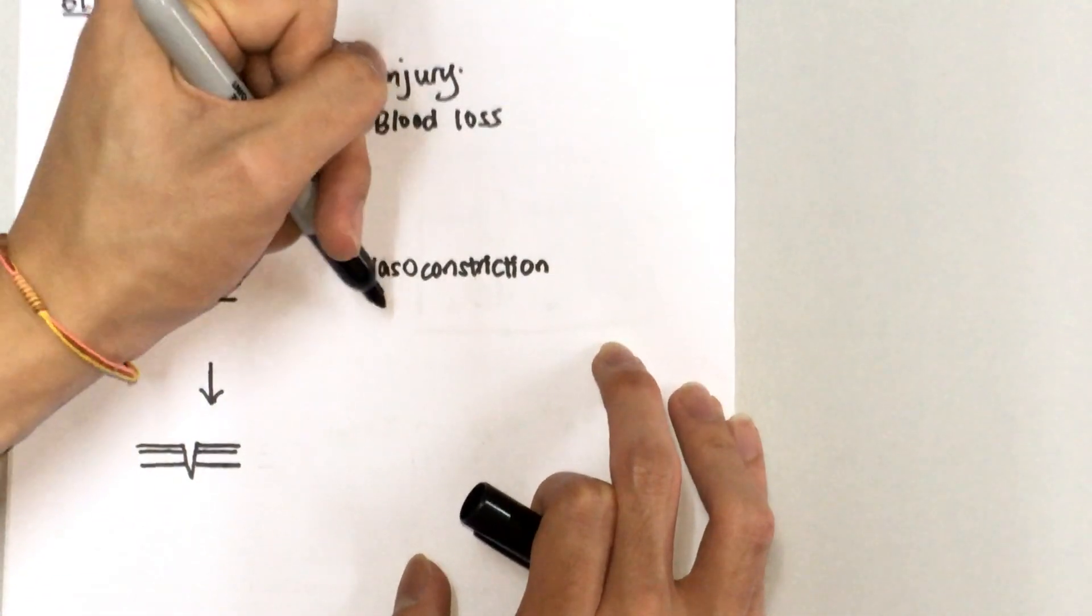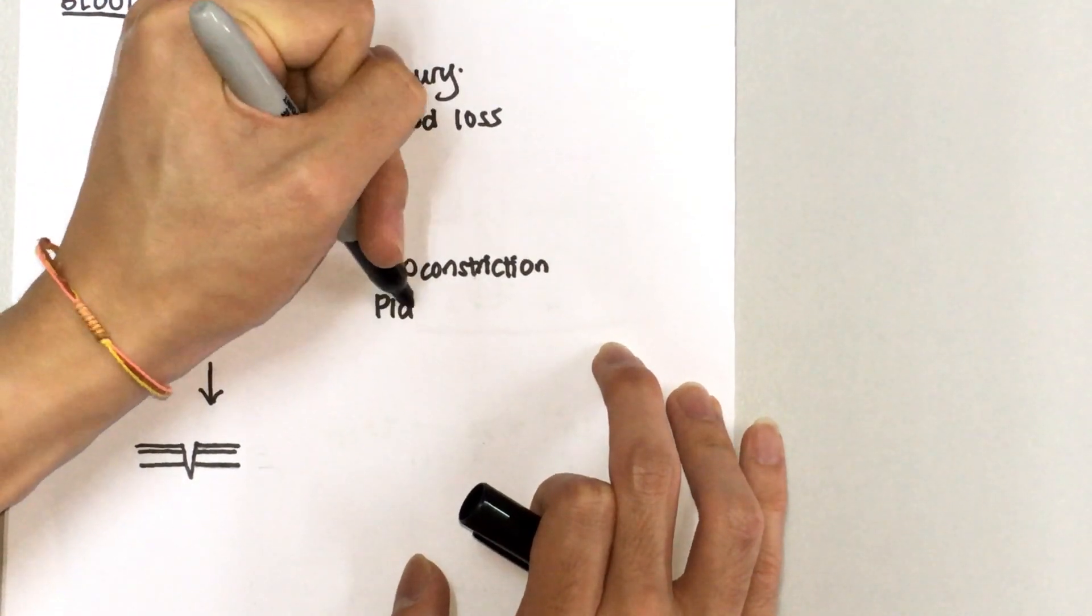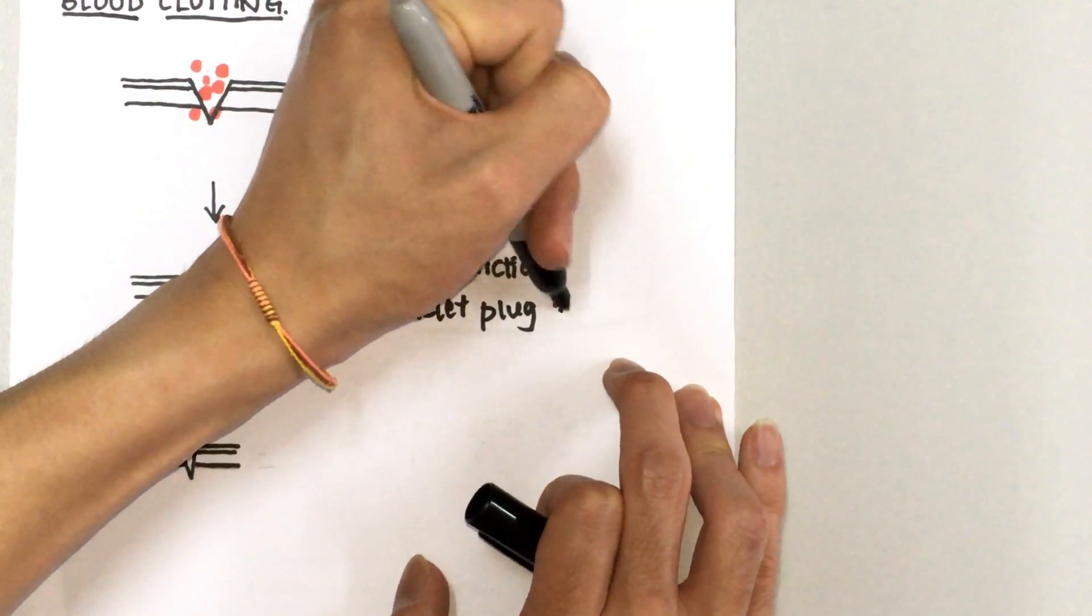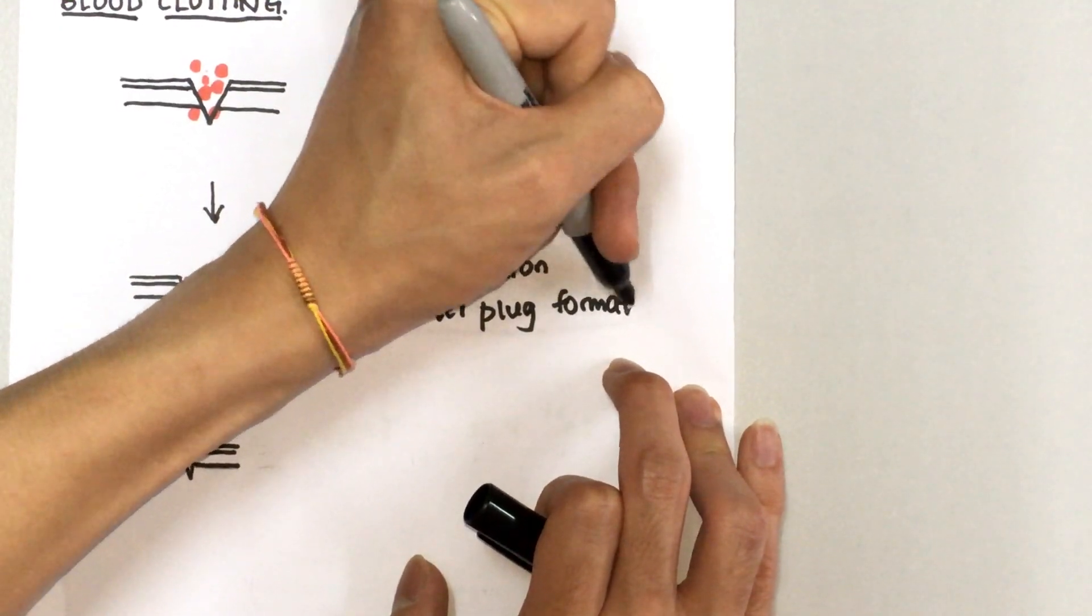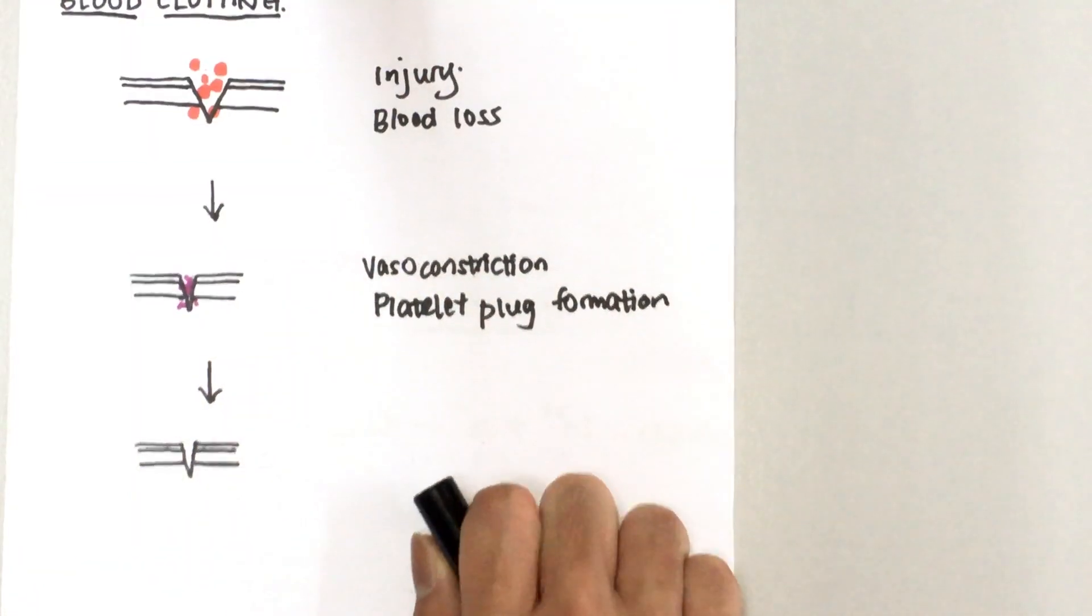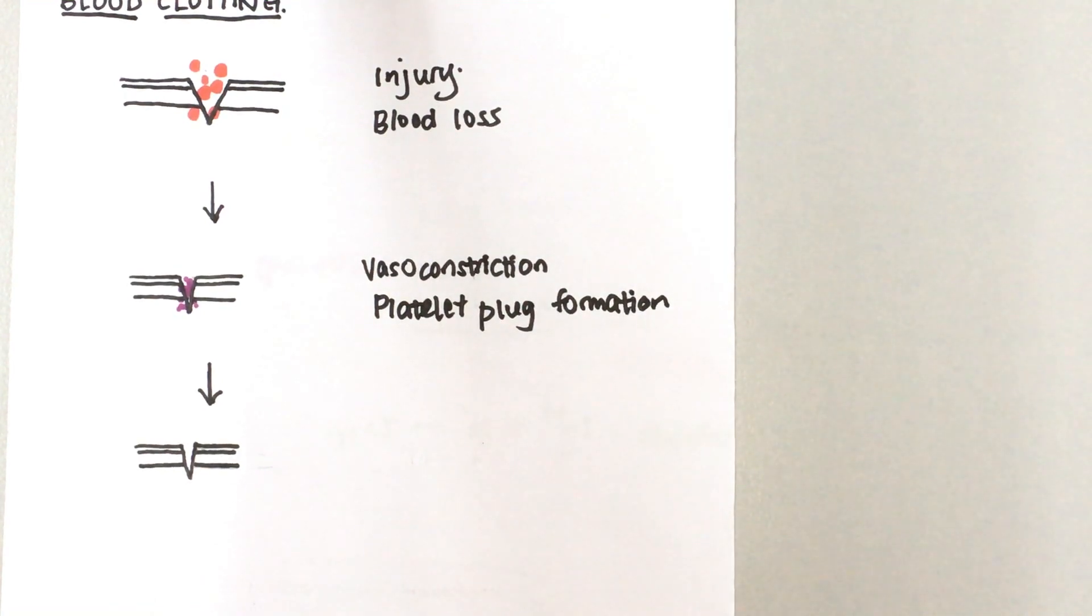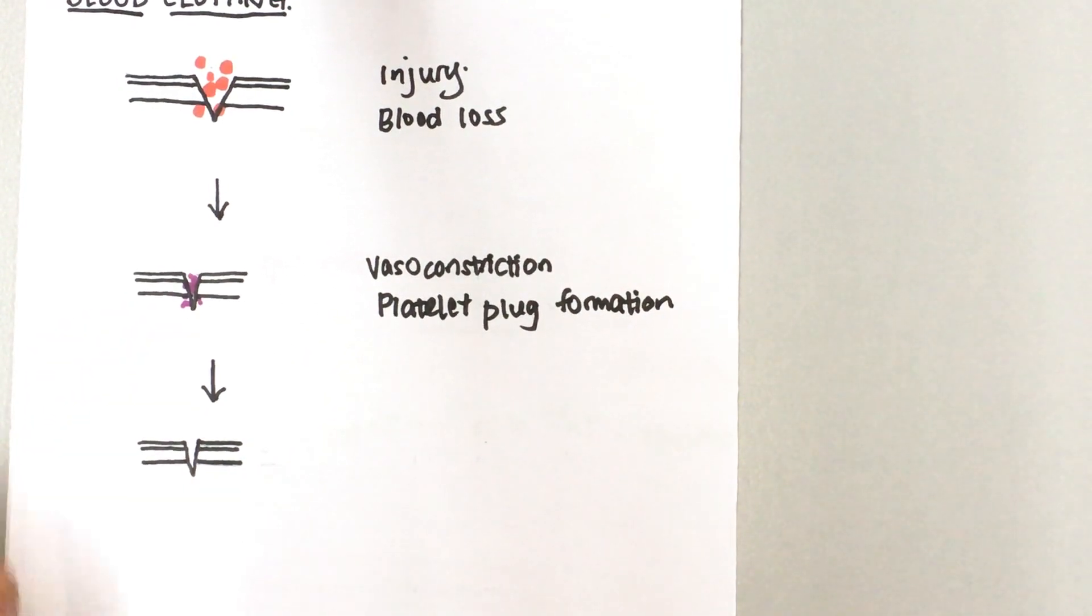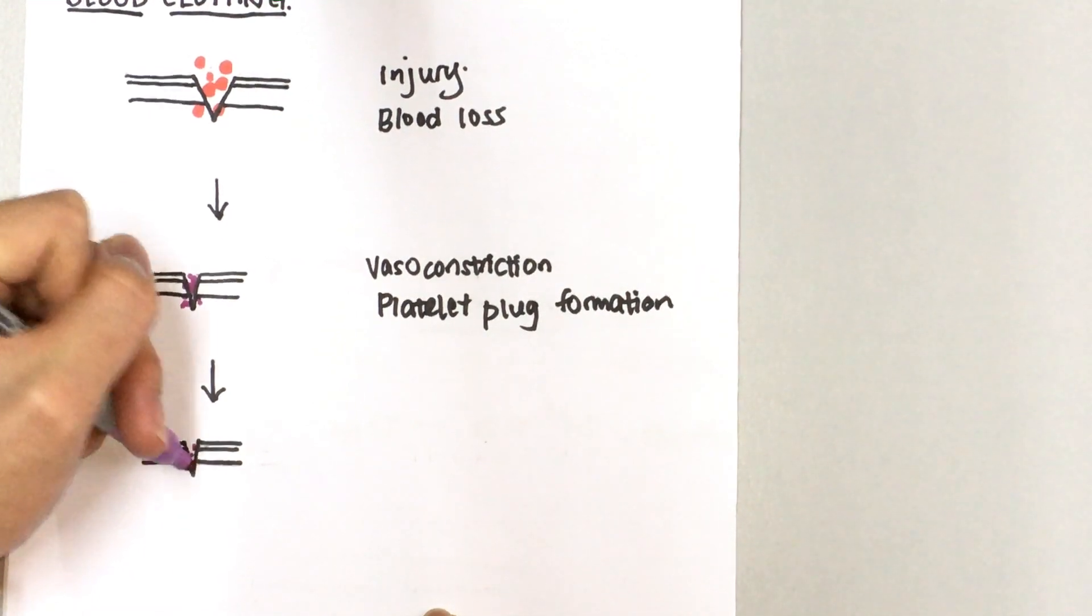narrowing of the blood vessel, and also we have a platelet plug formation. So the last step here, because the platelet plug itself is not strong enough, so we still have the platelet plug...